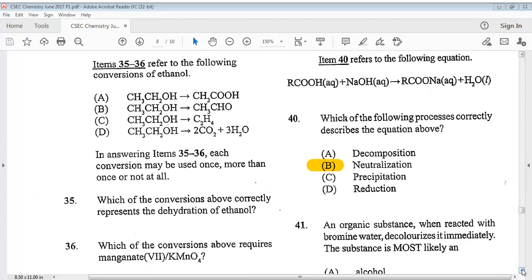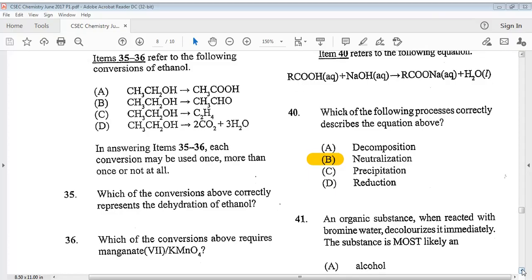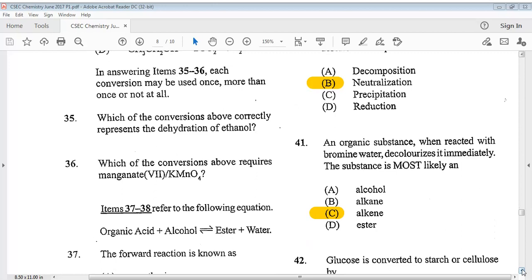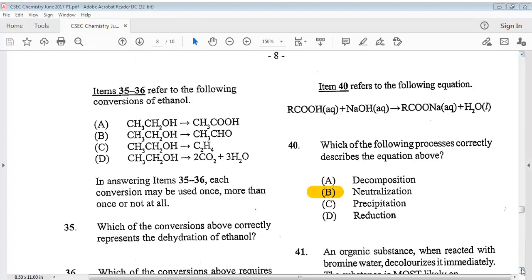Item 35 to 36 refers to the following conversions of ethanol. So you can take a look. It says, in answering the items 35 to 36, each conversion may be used once, more than once, or not at all. Question 35. Which of the conversions above correctly represents the dehydration of ethanol? The answer for 35 is C. Question 36. Which of the following conversions above requires potassium manganate 7, KMnO4? The answer is A for that.